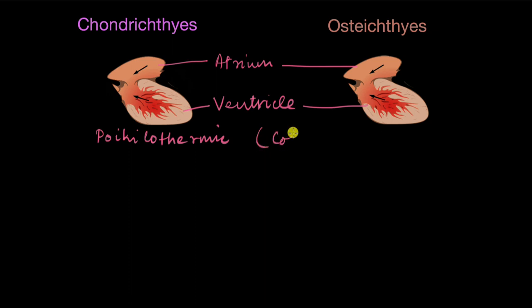Both types of fish are poikilothermic, which means cold-blooded. Neither Chondrichthyes nor Osteichthyes can regulate their body temperature. Human beings keep their body temperature at around 37 degrees Celsius no matter the season or location, but fish cannot do that — their body temperature fluctuates with the environment, hence they are called poikilothermic or cold-blooded.